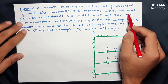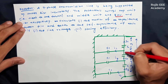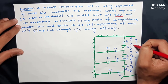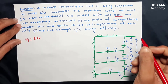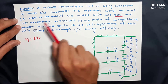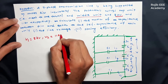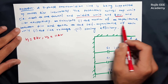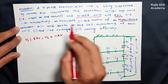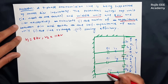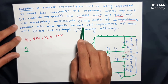The potential across the top unit, that means near to the tower, V1 is 8 kV. This is the middle unit, V2 is equal to 11 kV. The ratio of capacitance between pin and earth to the self-capacitance of each unit — that means C1 divided by C — is to be found.